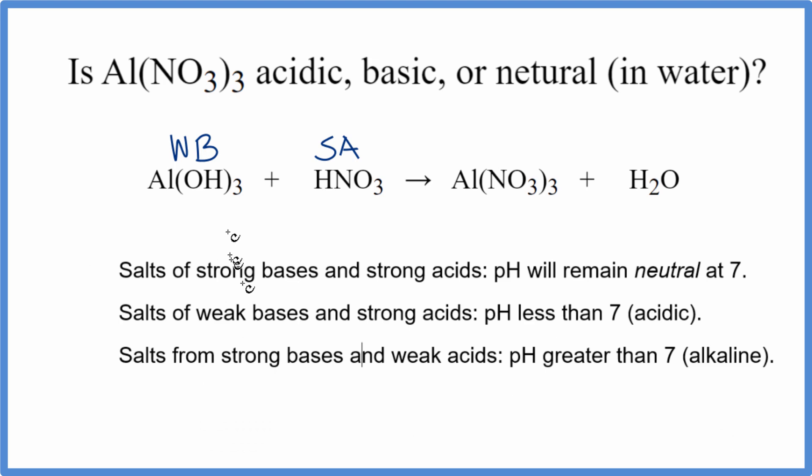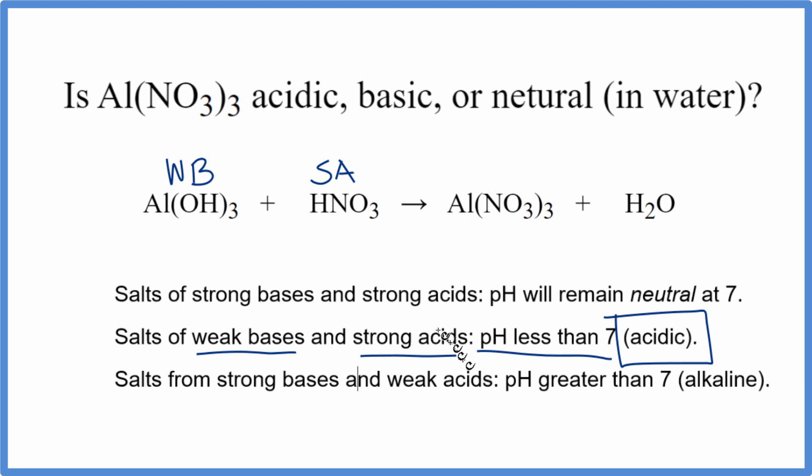Now when we look at our rules, we see if we have a weak base and a strong acid, the pH is going to be less than 7. That means it's going to be acidic. So in answer to our question, according to these rules, when we put aluminum nitrate in water, it will be acidic.